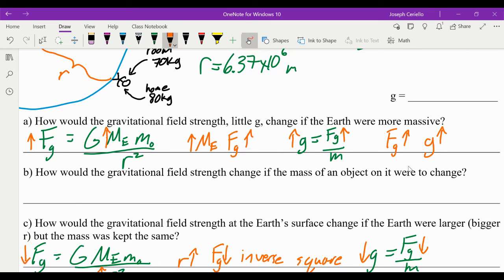How would the mass of the Earth change if the mass of an object on it were to change? So we know that we just established that, yes, the force of gravity would increase if an object on the Earth's surface had a greater mass. But we would then divide by that mass. Therefore, it is independent. Independent of mass of object on surface.